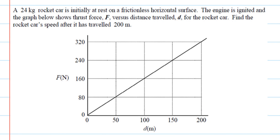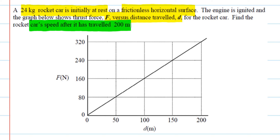Here is another practice graphing question. We have a 24 kilogram rocket initially at rest on a frictionless horizontal surface. The engine is ignited, and the graph shows force versus distance traveled for the rocket. We want to find the car's speed after it has traveled 200 meters, so we are looking for the final speed.